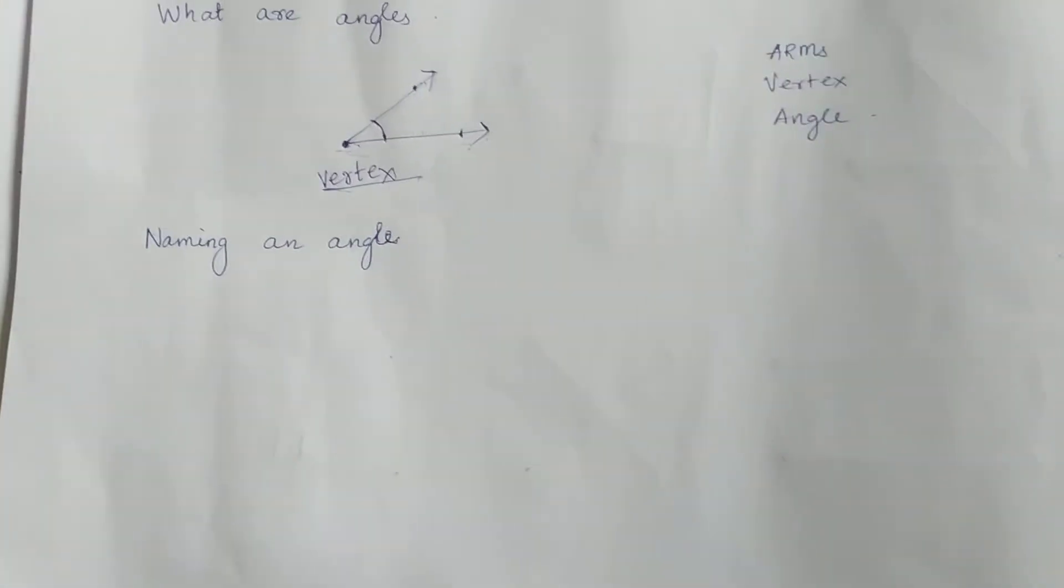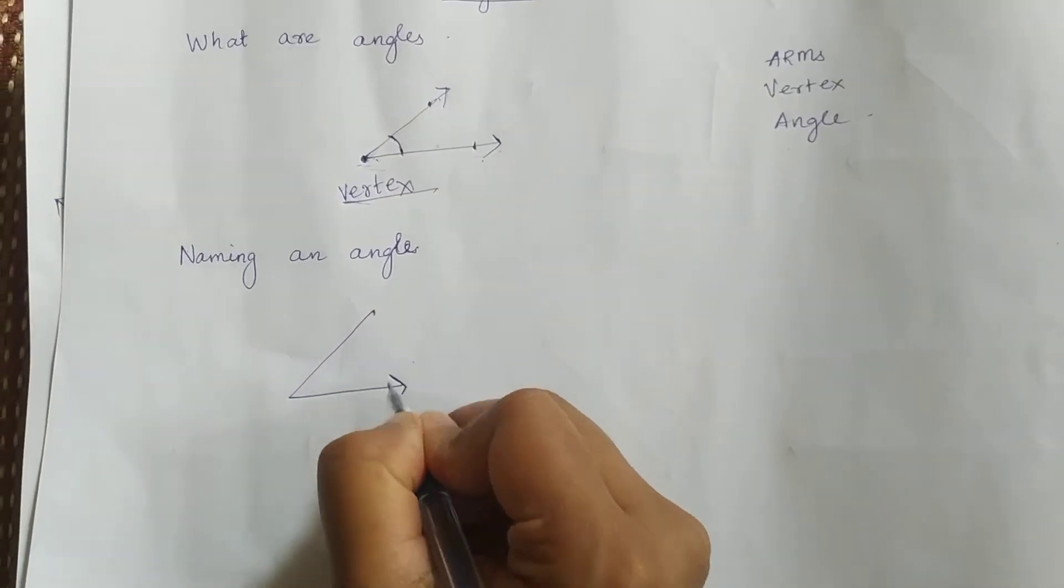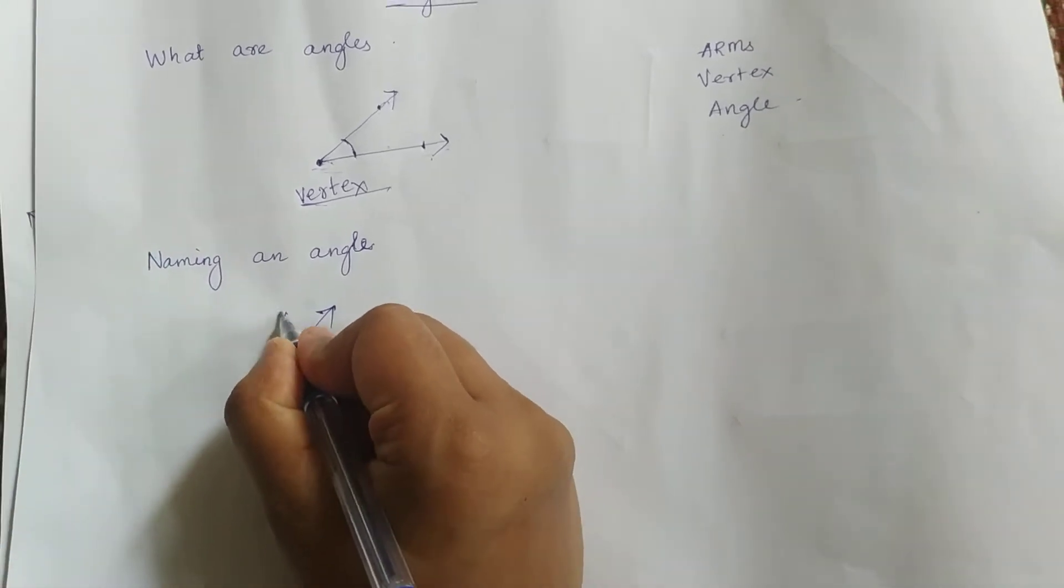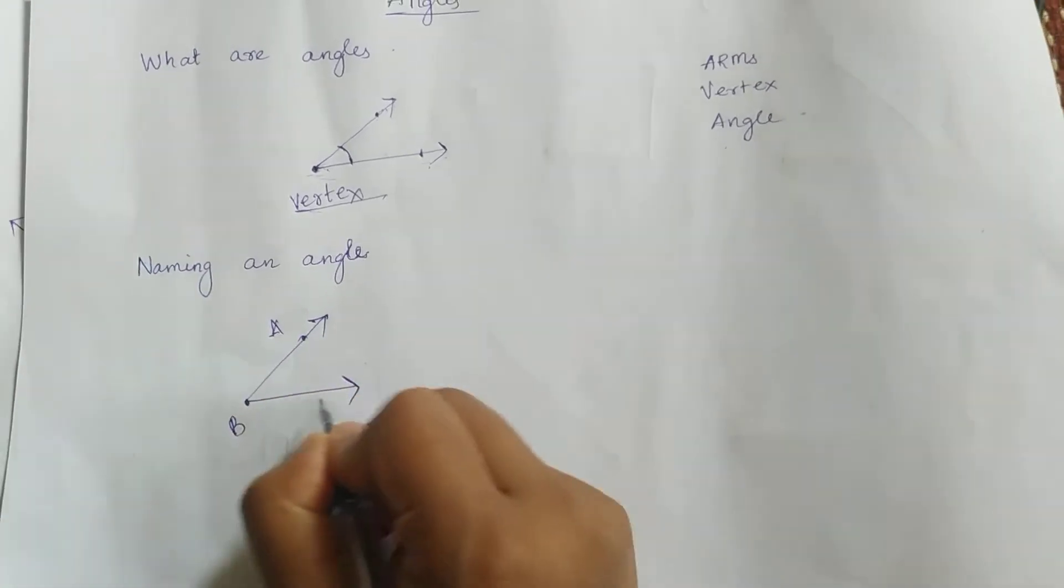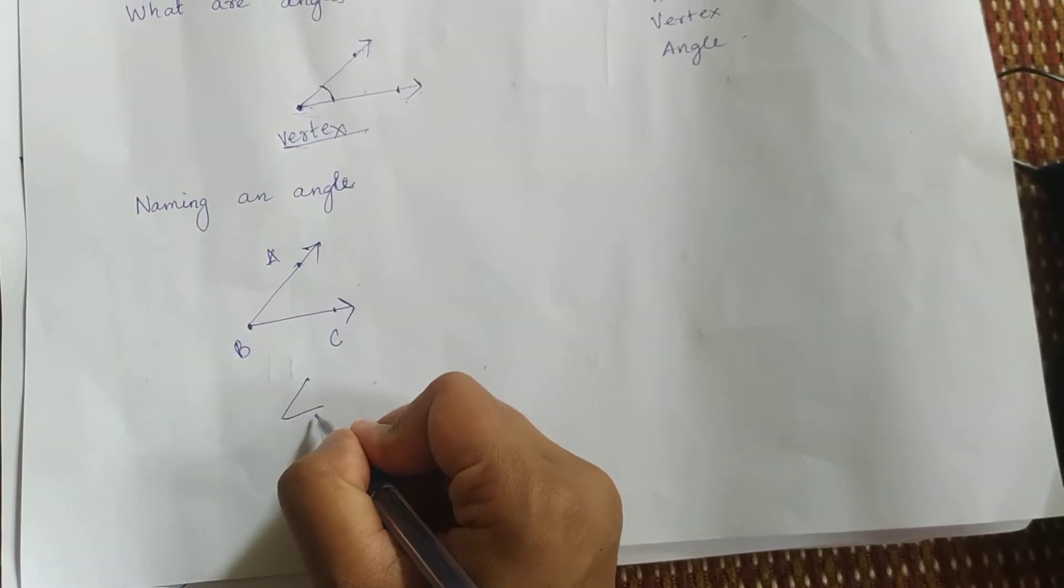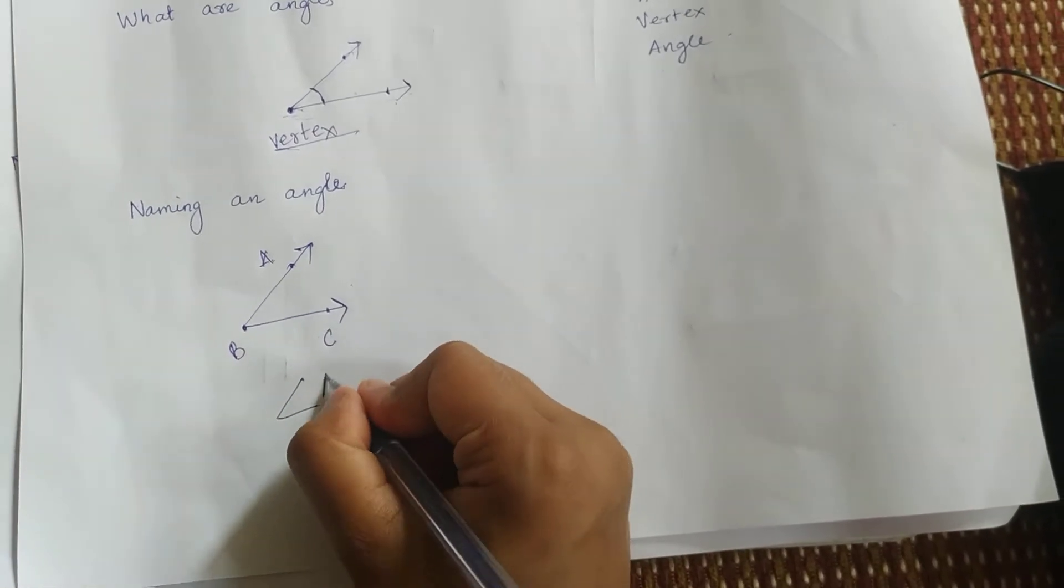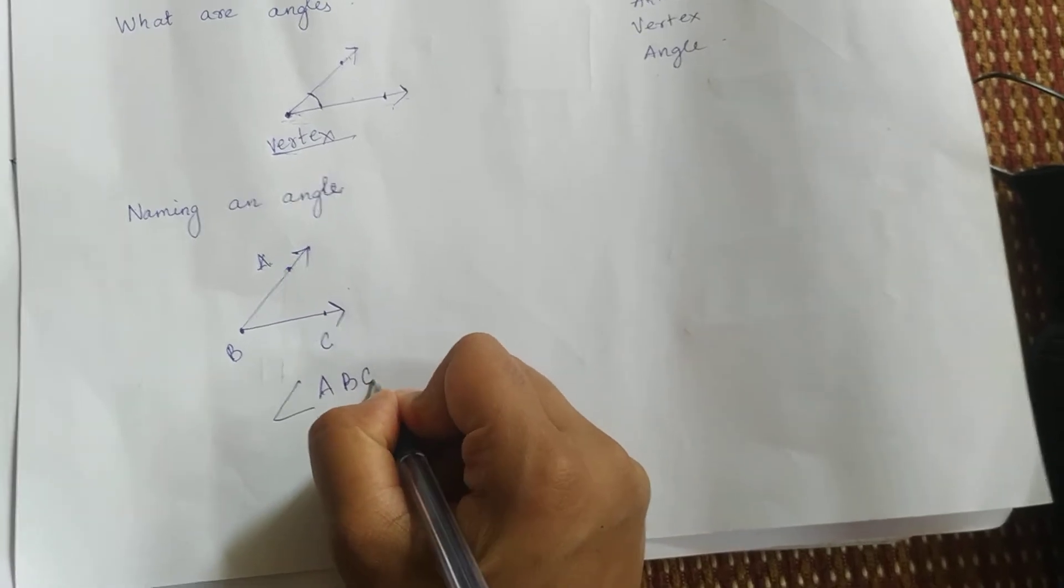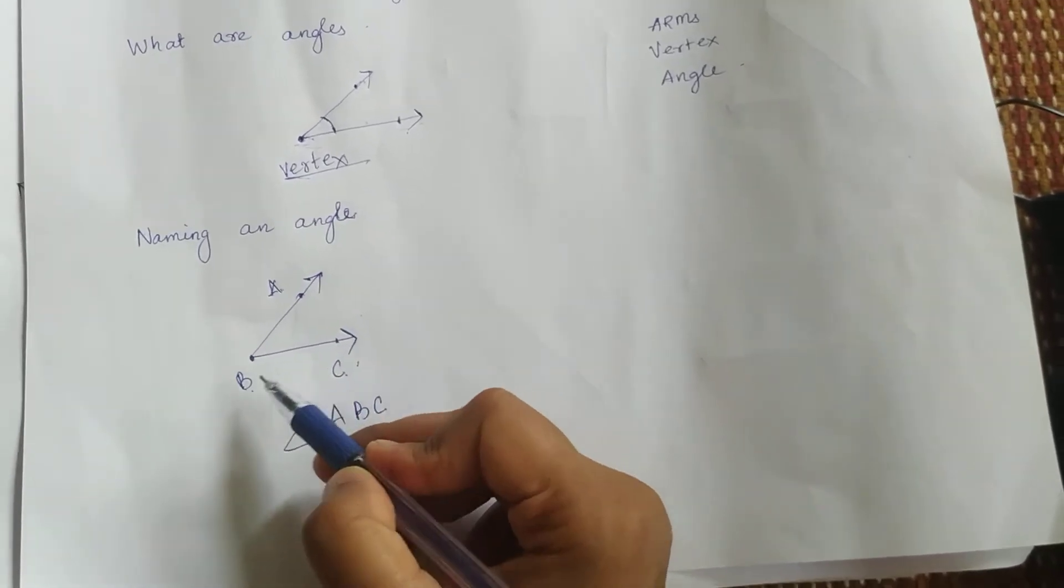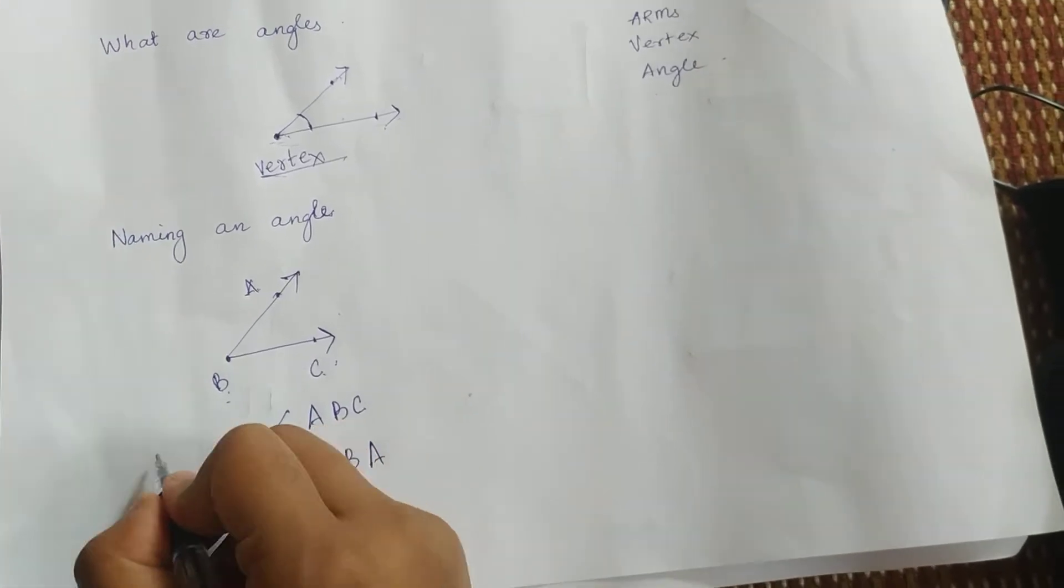Does an angle have a name? Yes, it does. And how do we write that name? Let's see. Suppose this is an angle. This point is A, this point is B, and this point is C. Then we call it angle ABC. This sign is the angle sign. A, B, C.